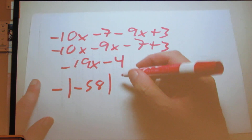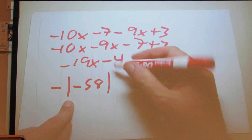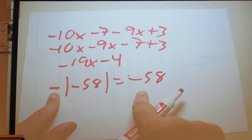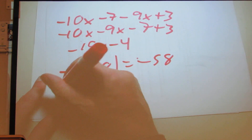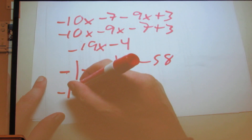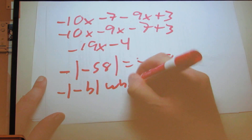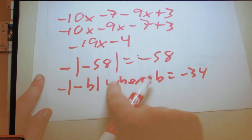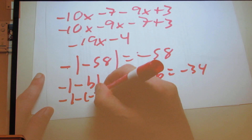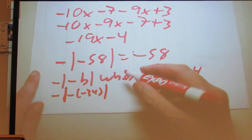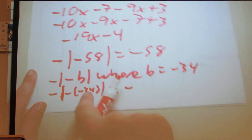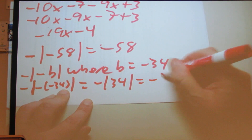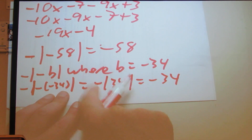Now let's work with absolute value. For negative absolute value of negative 58: absolute value means whatever is inside becomes positive, so negative 58 becomes positive 58, but we keep the negative on the outside — final answer is negative 58. For negative absolute value of negative b where b equals negative 34: we substitute to get negative |negative (negative 34)|, which is negative |34|, which equals negative 34, because the absolute value stays positive but we have the negative on the outside.